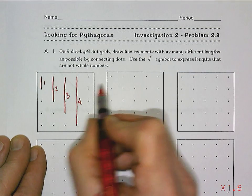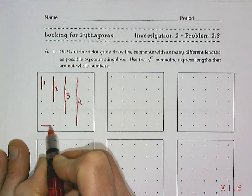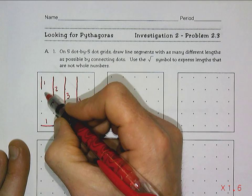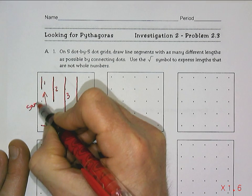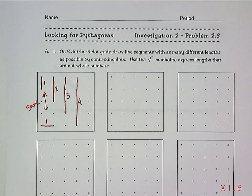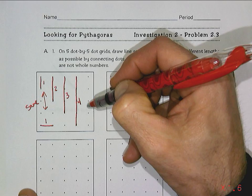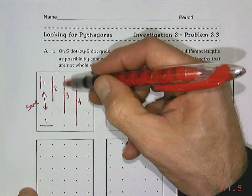And if I were to do them the other direction, they would be the same length, so if I'd gone this way, it's still one, so it's not really any different than this one. Those two are the same, so we don't really need to do them both directions. Now, these are the only lines we can do that connect dots directly that give us whole number lengths.